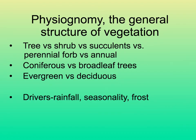Going back to physiognomy — the general structure of vegetation, what things look like — you may find very similar-looking vegetation in really different parts of the world, made up of very different species. All over the world we can find places with big tall trees and forests, and other parts that are dry with few succulent plants. The drivers of this appearance of vegetation are rainfall, temperature, seasonality, and whether or not things freeze.